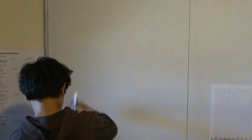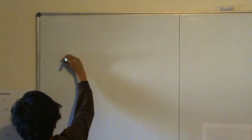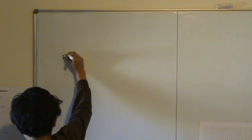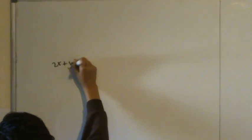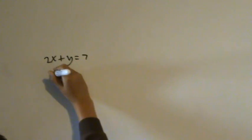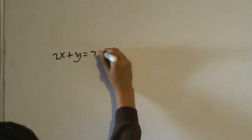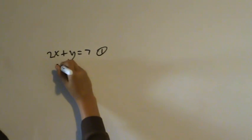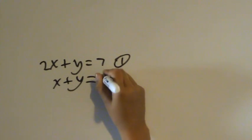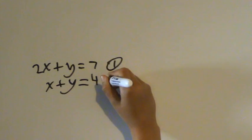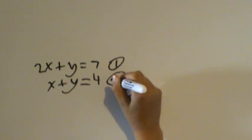I'm going to pick an equation from the book. 2x plus y equals 7. The second equation is x plus y equals 4. And that is equation 2.